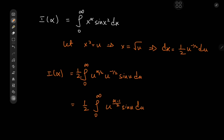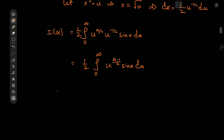One way to evaluate this is to look up a table of Mellin transforms for the sine function. However, the Chad way of solving this is to apply Ramanujan's Master Theorem, which is exactly what we're going to do. Let's invoke complex numbers: sine(u) is the imaginary part of e^(iu). So we can restate the integral as I(α) equal to one-half times the imaginary part of the integral from 0 to infinity of u^((α+1)/2 − 1) times e^(iu) du.